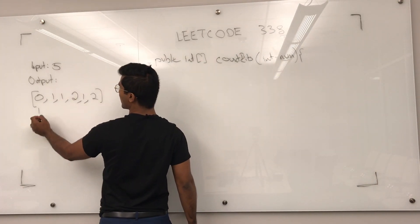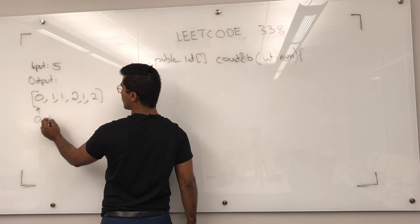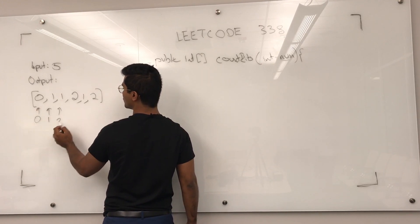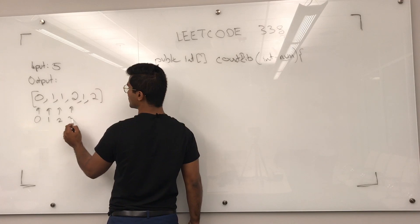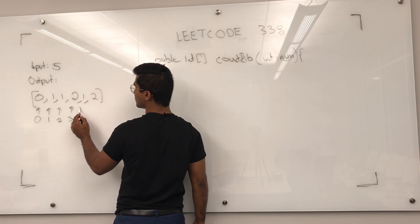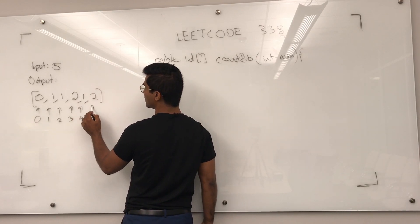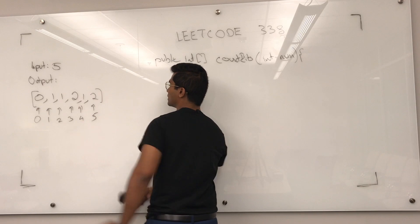So 0 is going to have no set bits, 1 is going to have one set bit, 2 is going to have one set bit, 3 is going to have two set bits, 4 is going to have one set bit, and 5 is going to have two set bits.